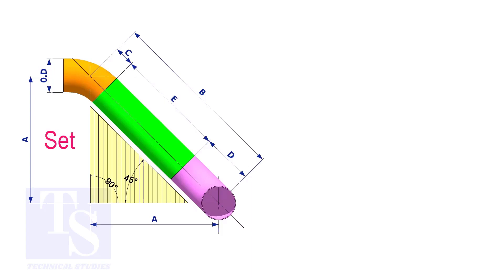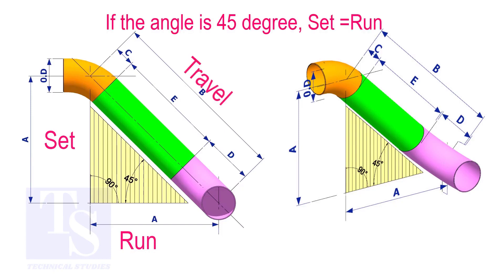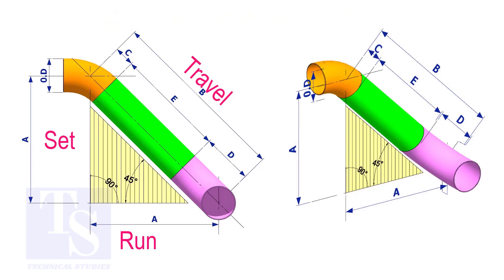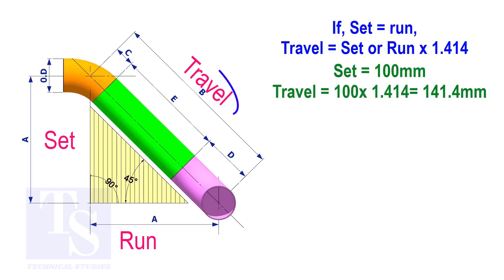In an offset, if the included angle is 45 degrees, the set and the run shall be the same. If the value of the set and the run are equal, the value of the travel is the set or the run multiplied by 1.414. For example, if the value of the set is 100, the travel is 100 multiplied by 1.414, which equals 141.4.